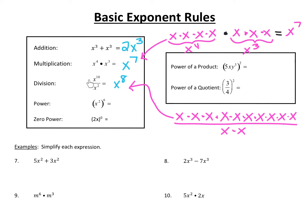When you're dividing two terms with the same base, you divide the numbers in front and subtract the exponents. So x to the 10th divided by x squared is x to the 8th. You can see why: 10 x's on top divided by x squared — 2 of those x's on top cancel with the 2 on the bottom, leaving you with 8 x's. That's where x to the 8th comes from. So when you're multiplying, you add the exponents; when you're dividing, you subtract the exponents.